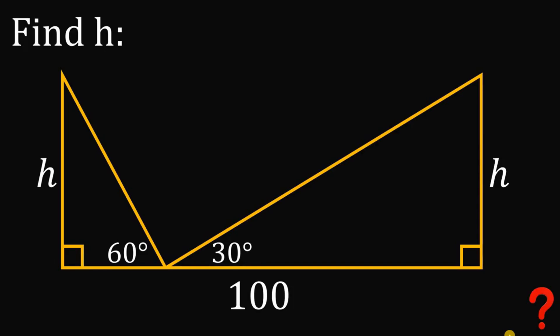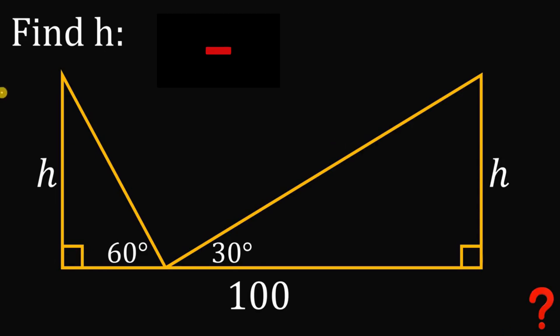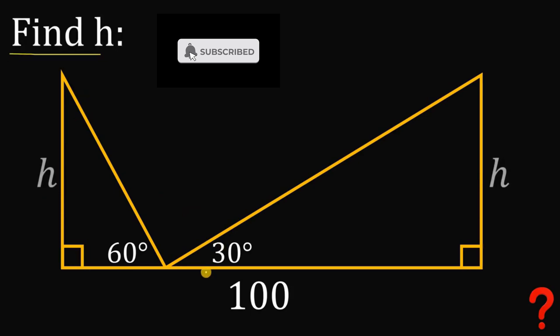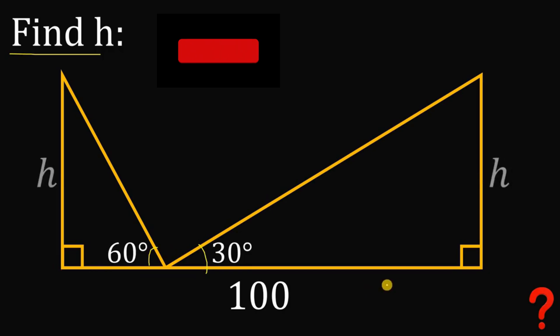Can you solve this geometry challenge? Here's the question: solve for the value of H, given this figure. This angle measures 30 degrees, this angle measures 60 degrees, and the total length of this base must be equal to 100 units.